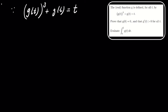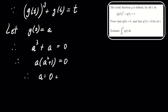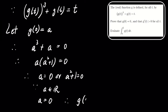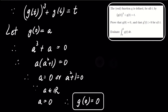To prove that g of 0 equals 0, we will let g of 0 equal a. Then, substituting into our equation, we have a cubed plus a equals 0. This simplifies to a times the quantity a squared plus 1 equals 0. From this, we see that a equals 0 is the only real solution since a squared plus 1 is greater than 0 for all real a. Thus, we conclude that g of 0 equals 0.